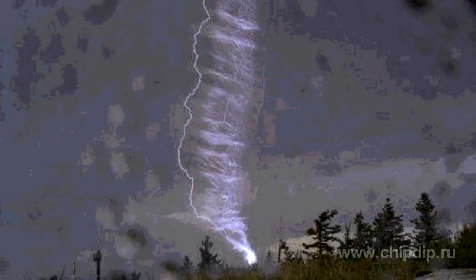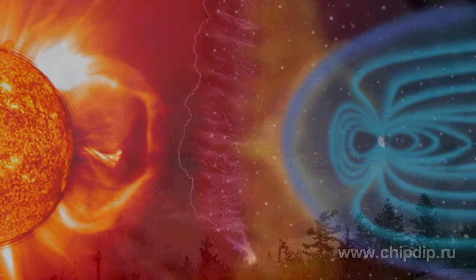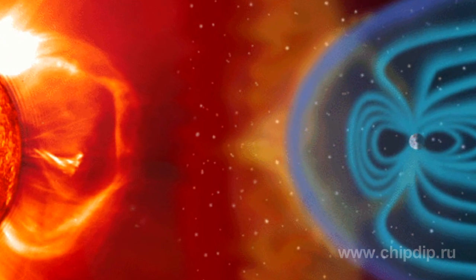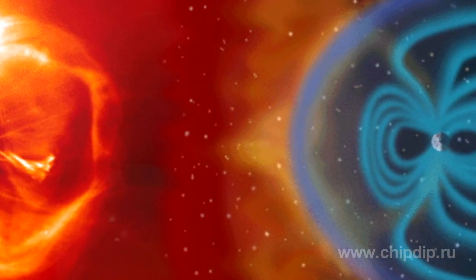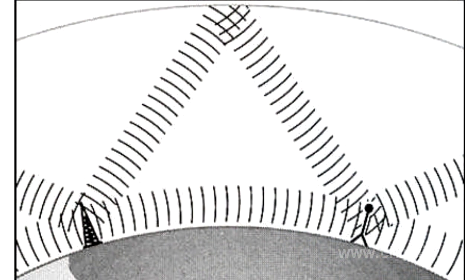At a height of 60 to 100 km above the Earth, the ionized area of the upper atmosphere, also called ionosphere, is located. Due to exposure of solar ultraviolet radiation, an electric potential charge, or ionization, emerges in the ionosphere. That is, the ionization depends on the activity of solar radiation.